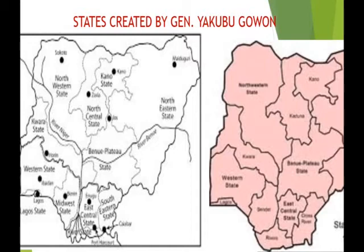You can see the 12 states on a map. We have the North Central states, the North Eastern states, the South Eastern states. He also created Lagos State, North Western State, Rivers State, Benue-Plateau State, Kwara State, Midwest State, Kano State, East Central State, Western State, and Kwara State — 12 states in all.